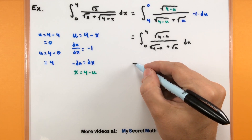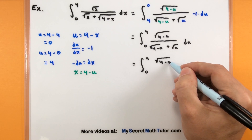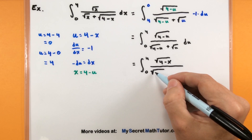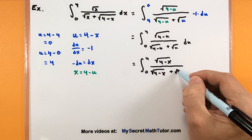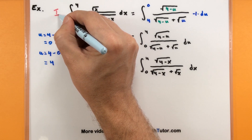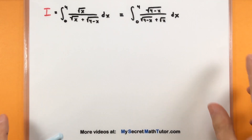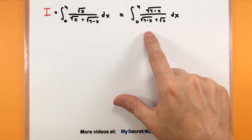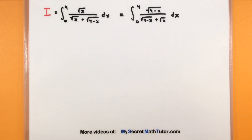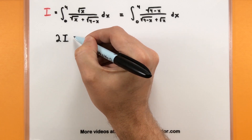Since u is a dummy variable, I can write this same integral and just put x's in for all the u pieces. This doesn't feel like you should be allowed to do this — we just had x in here a moment ago — but it's just a dummy variable, so this is completely okay. So now the integral from 0 to 4 has square root of 4 minus x in the numerator and square root of x in the denominator. We started with the original integral, which I'm calling capital I, and we've worked it into this brand new integral — it really is the same integral, just in a different form.